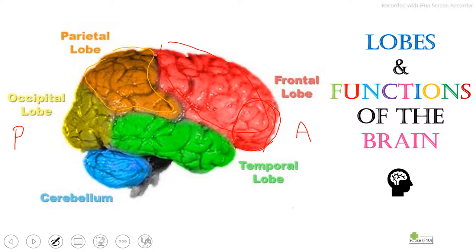Next we have the temporal lobe here. This lobe is the primary auditory and olfaction processing center — auditory being the things we hear and olfaction being the things that we smell. This lobe also has the Wernicke's area, which is contained in the left hemisphere. The Wernicke's area is in charge of understanding and producing meaningful speech.